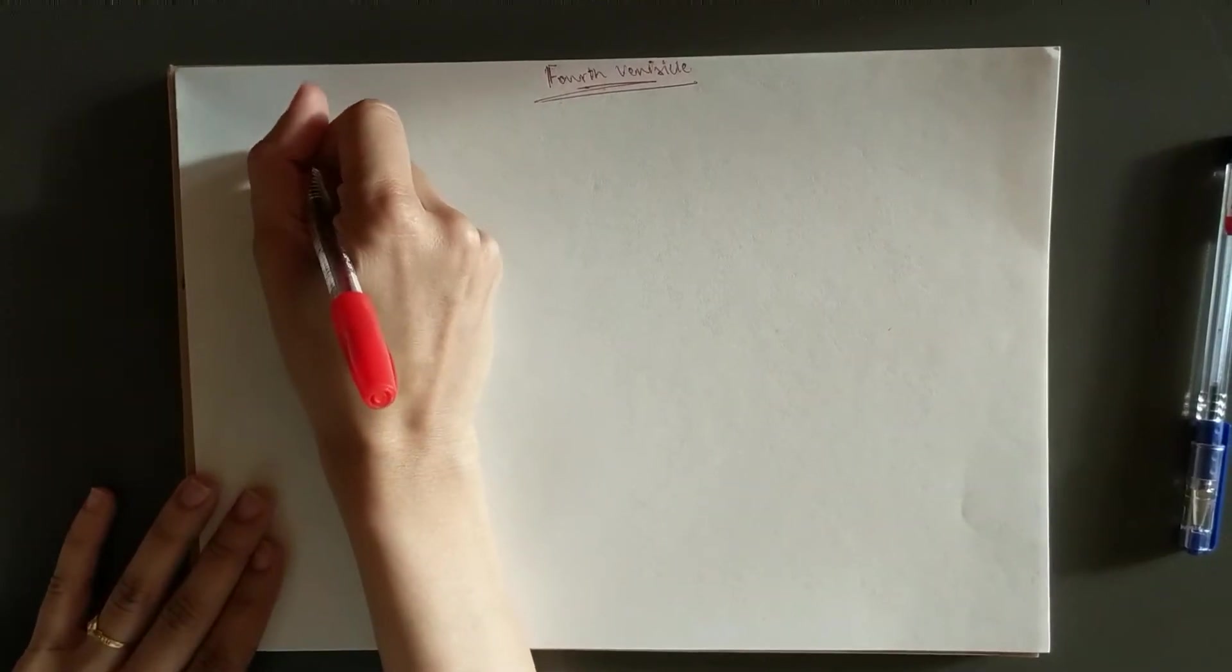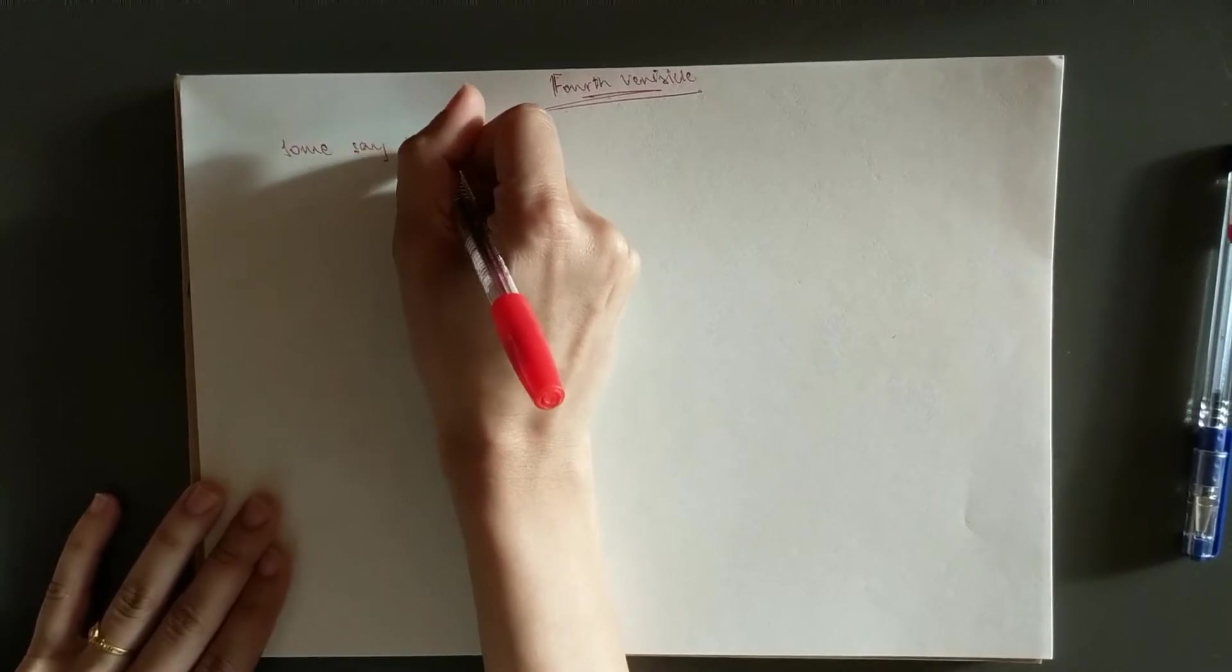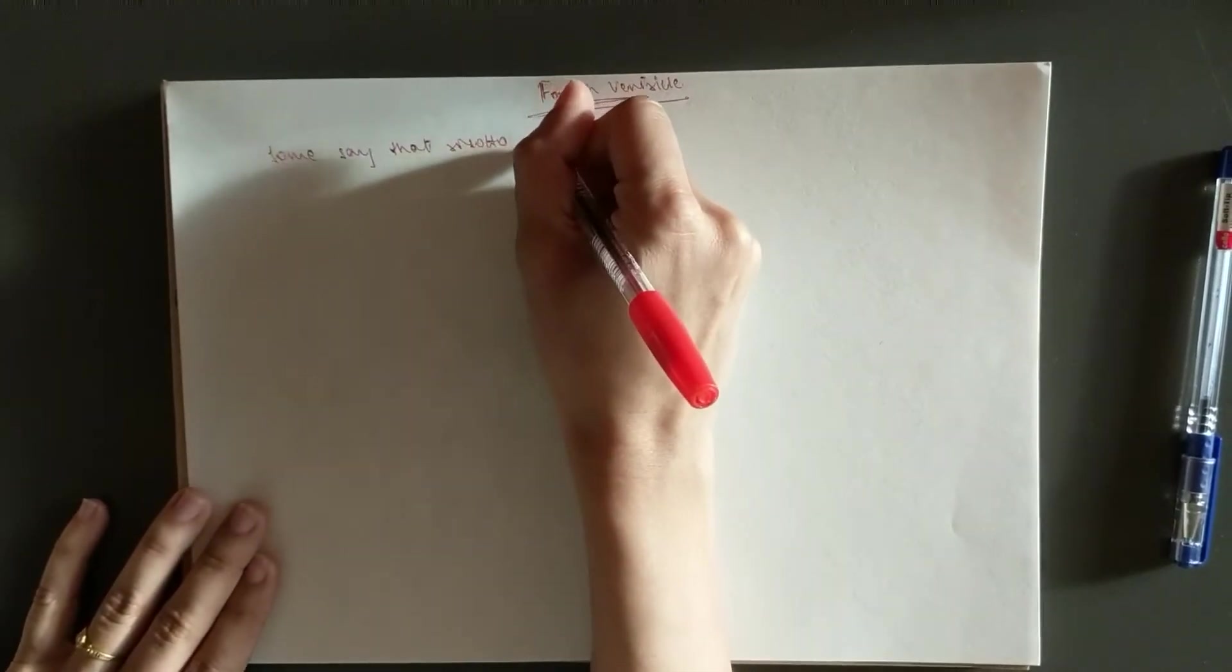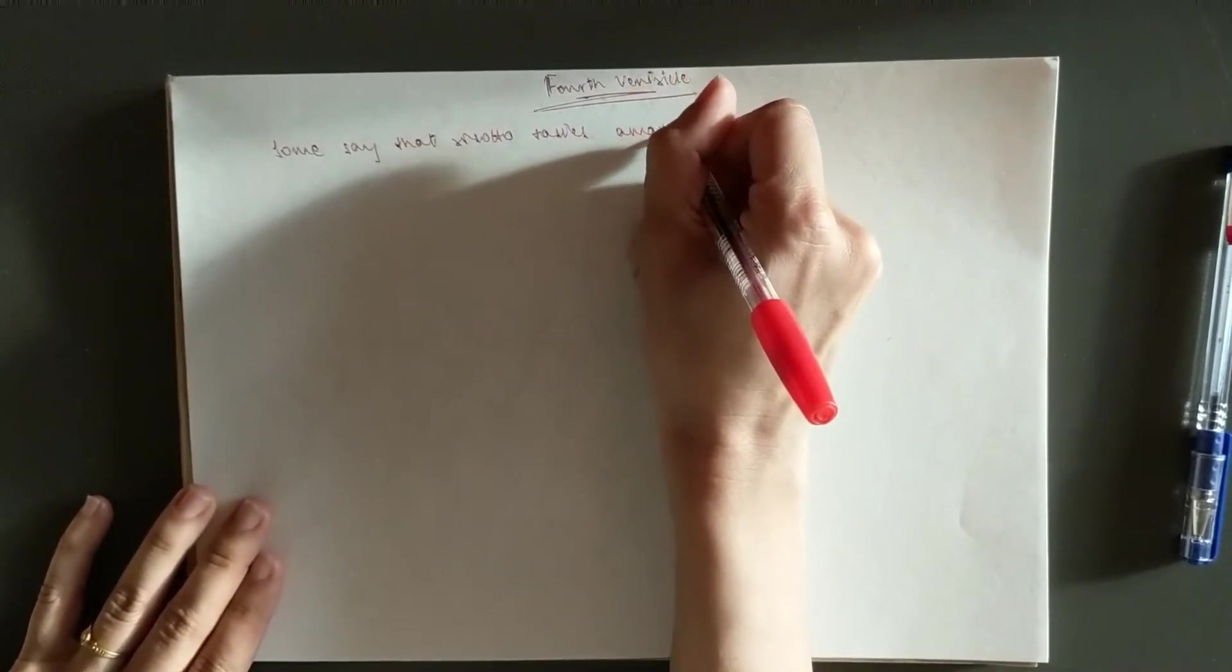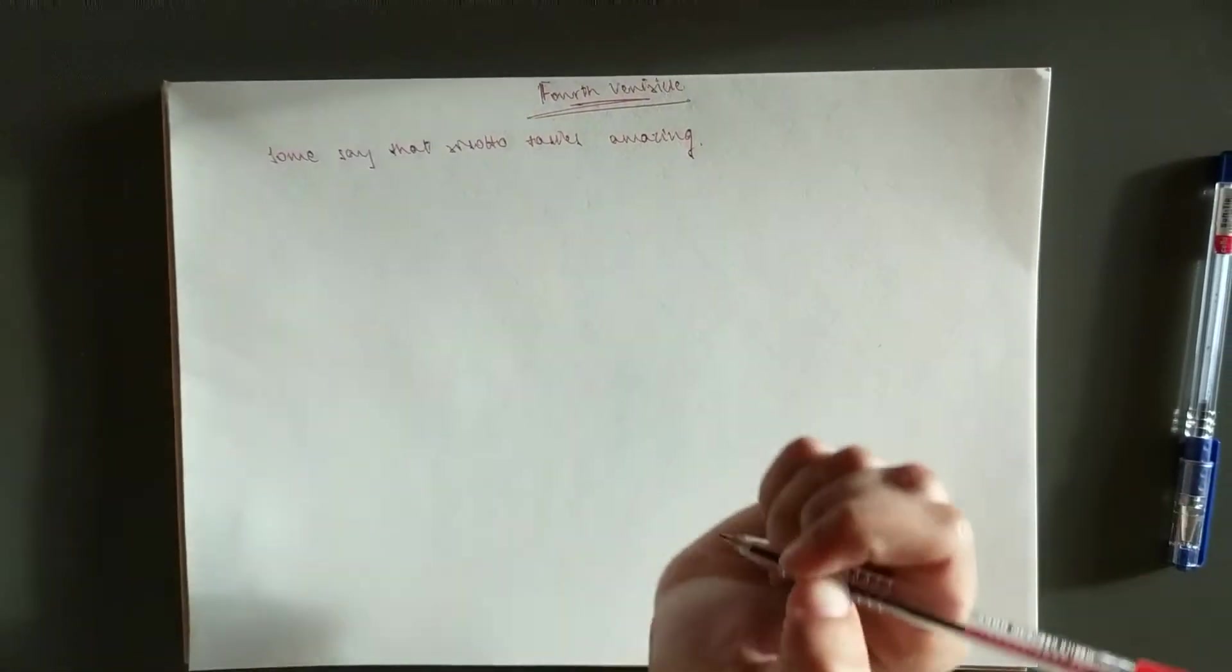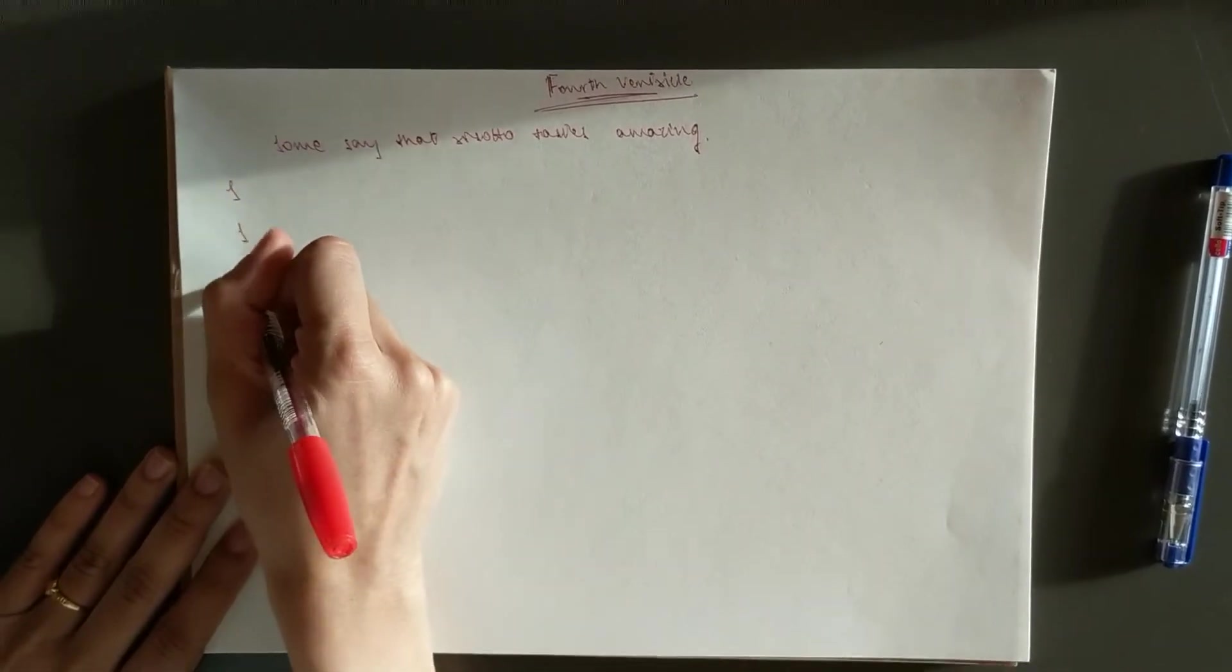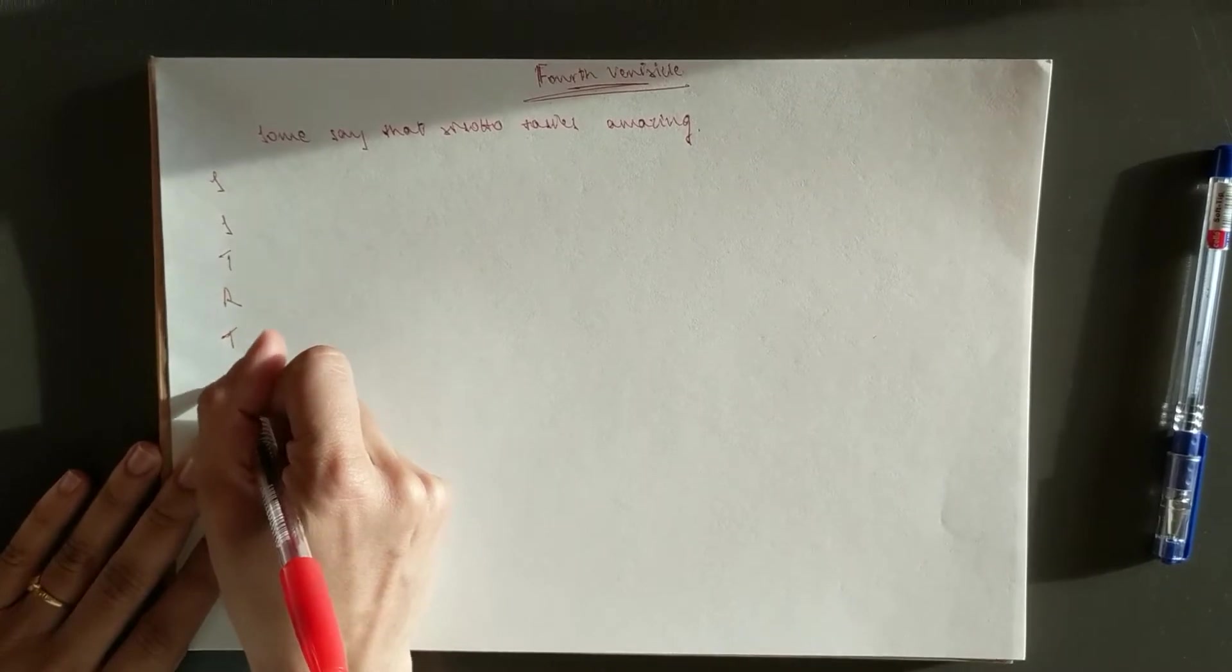The mnemonic is: Some say that risotto tastes amazing. Now you can think of any food item that you like and that starts with R and put it there. So let's write our letters down. We have S, S, T, R, T and A.